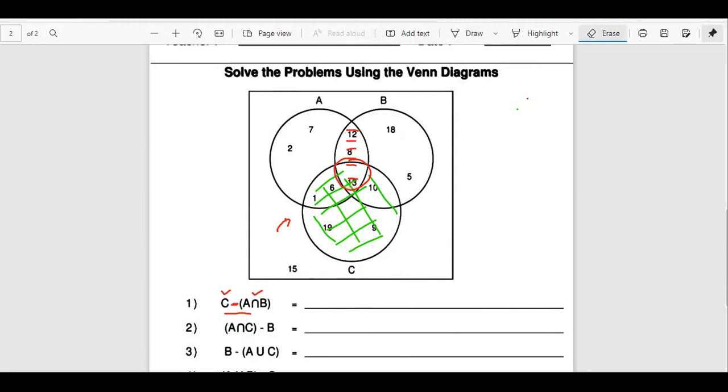So in C, initially we had 1, 6, 13, 10, 19, and 9. And these are the elements. This is 2 and 7. Be very careful with this. And now when we minus A intersection B, we minus this. So we only have 1, 6, 10, 19, and 9. So this was the answer. Are you clear now? Yes. This is the answer, the yellow region without the red circle.